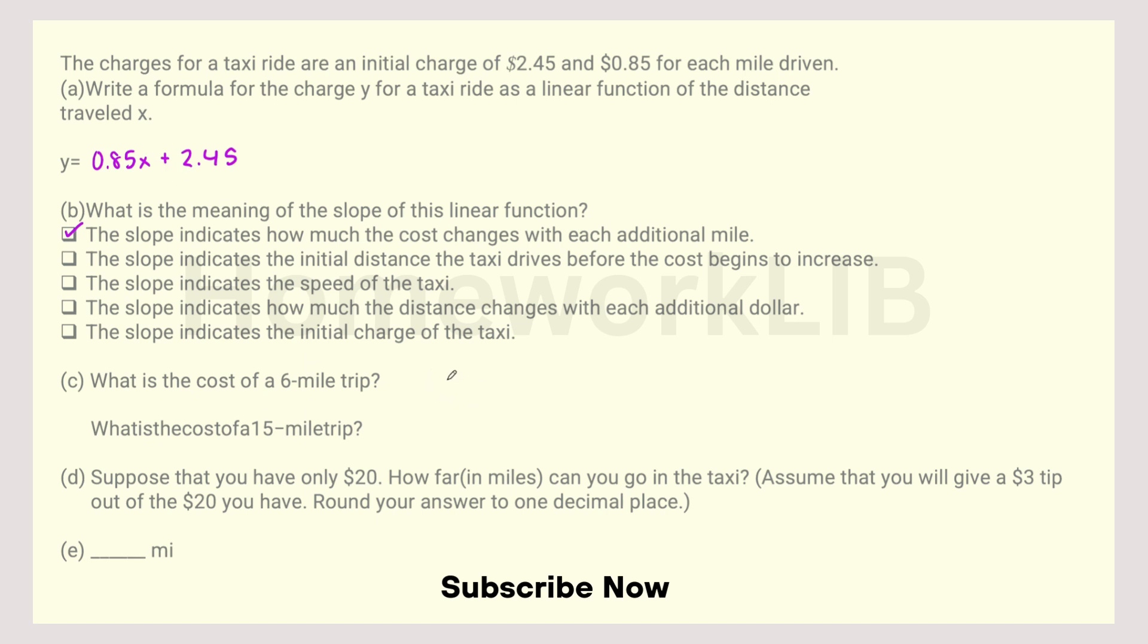What is the cost of a six-mile trip? So you would do 0.85 times 6 plus $2.45. So using my calculator, 0.85 times 6 plus 2.45, and that's $7.55.